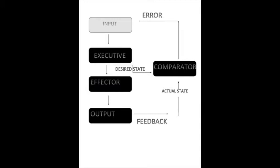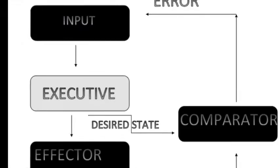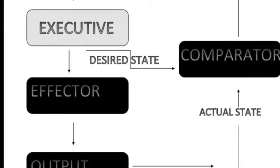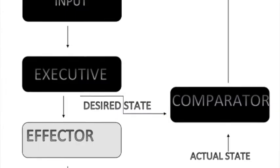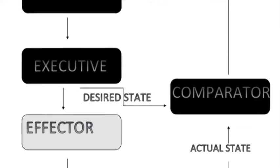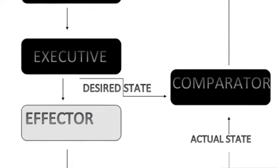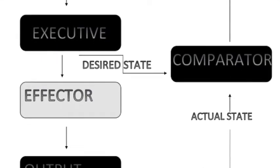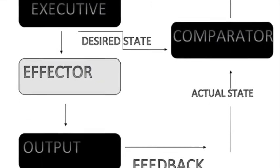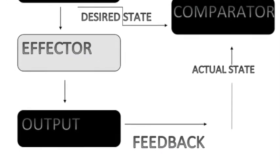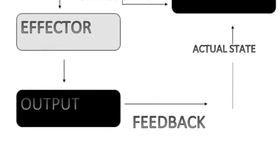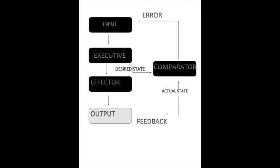In this diagram, it shows all actions that must occur. First you have your input — that's going to be your stimulus that you hear or see that makes you start to move. Then your executive, which determines the action necessary to maintain the desired goal. The effector is the component of the control system that carries out the desired action — that would be legs moving back and forth for a runner. The output would be the motor behavior or action produced as a result of the information processing.